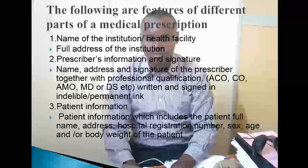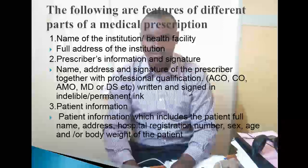The following are features of different parts of medical prescription. Name of institution: this covers the full address of the institution. Similarly there is prescriber information and signature — the name, address, and signature of the prescriber together with their professional qualification. Patient information includes the patient's full name — all names — and address showing where the patient can be found.